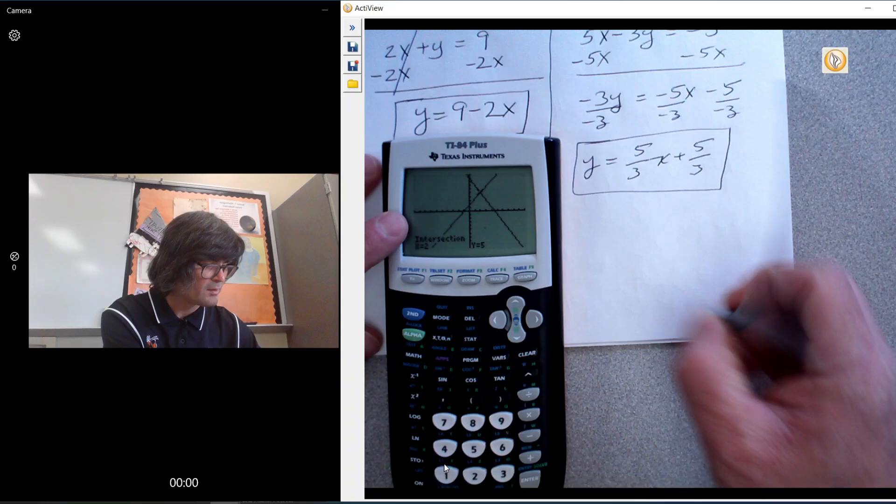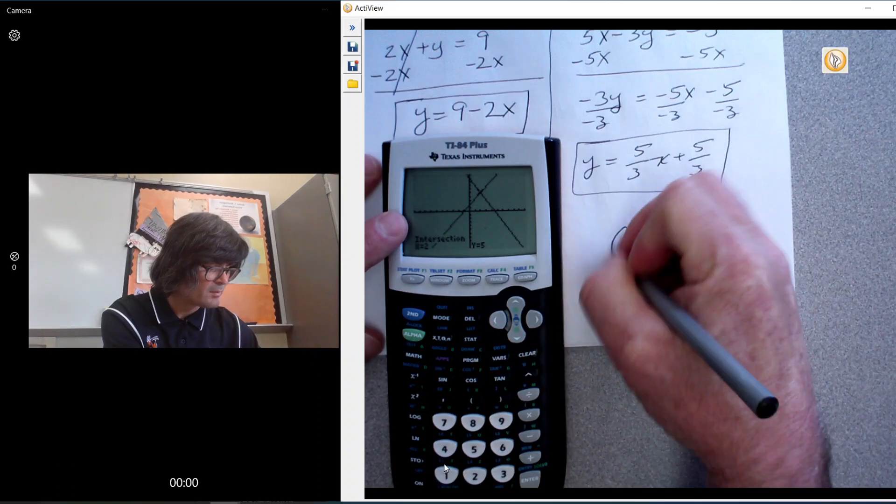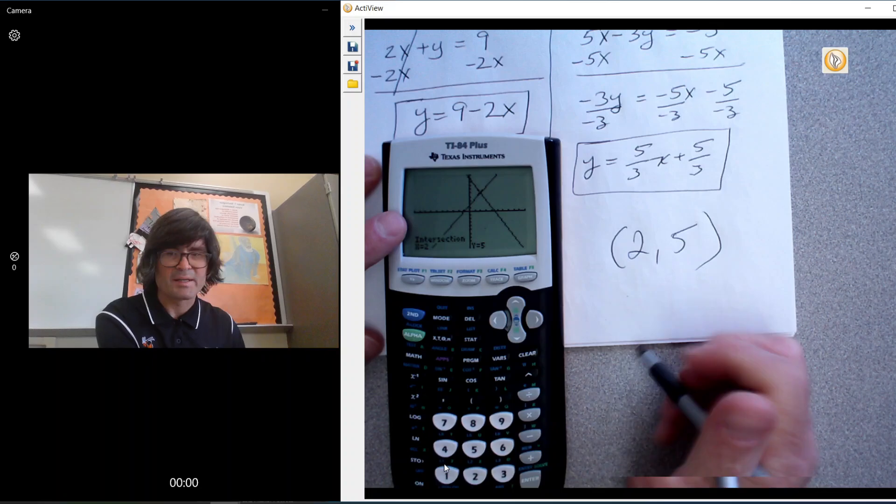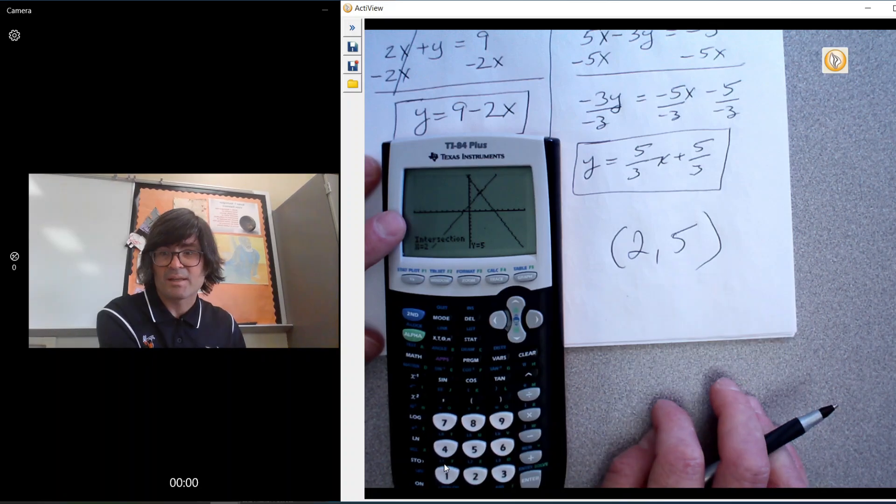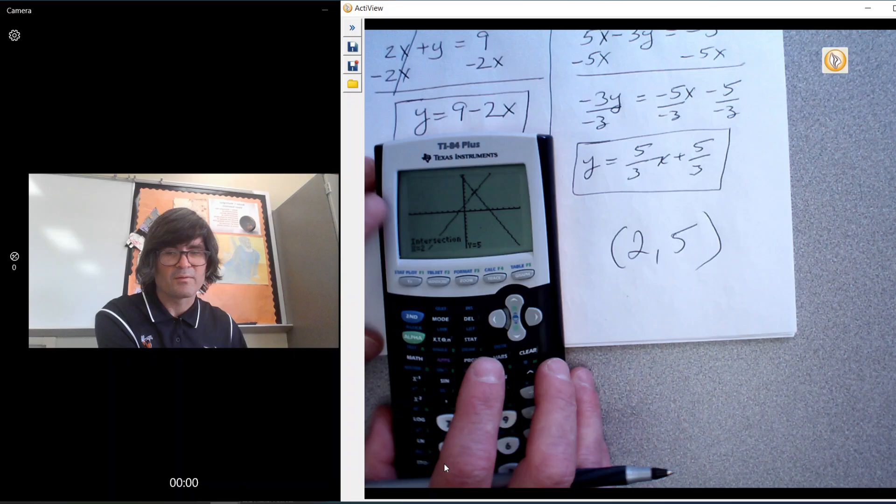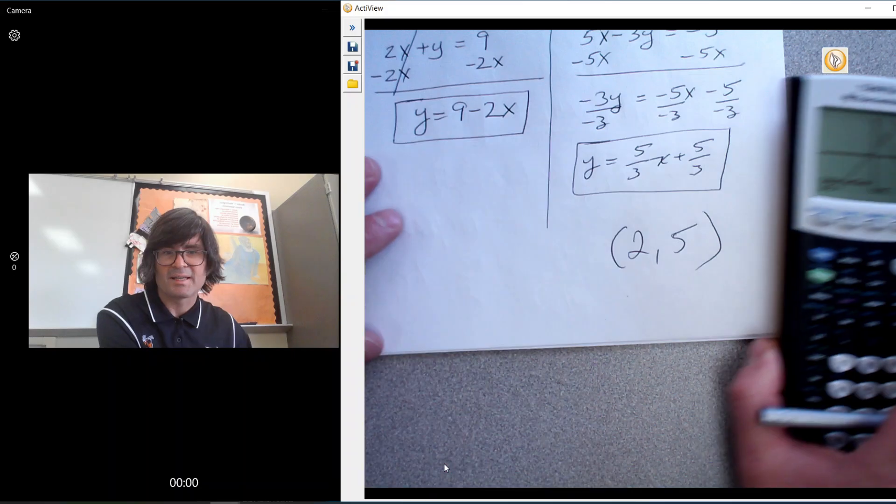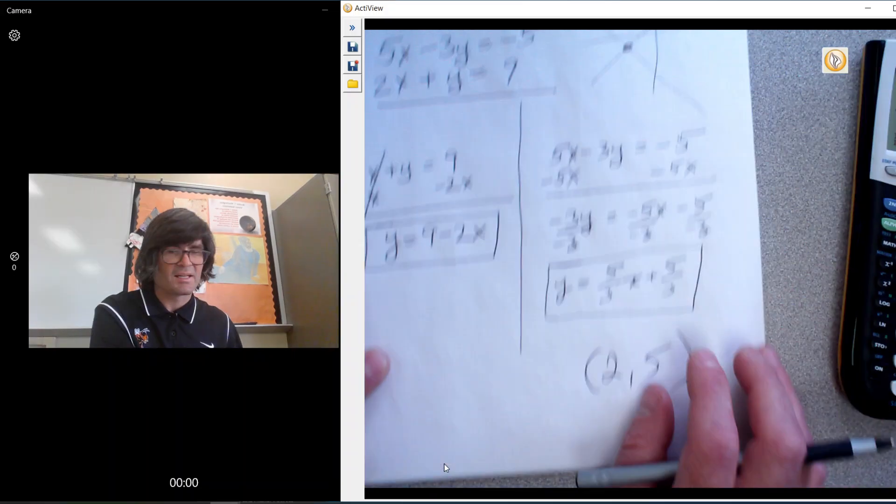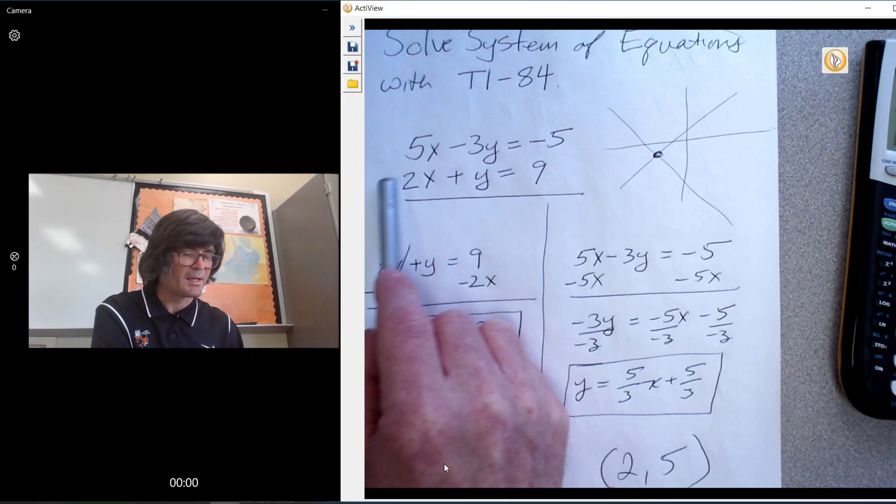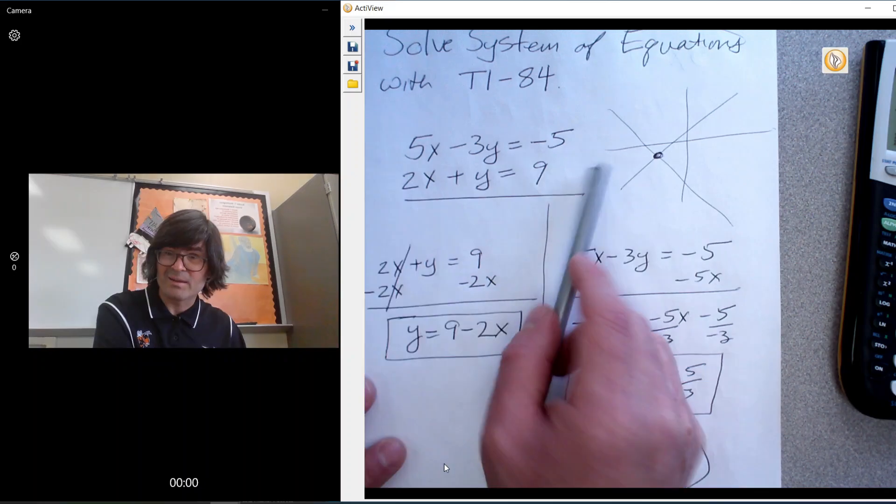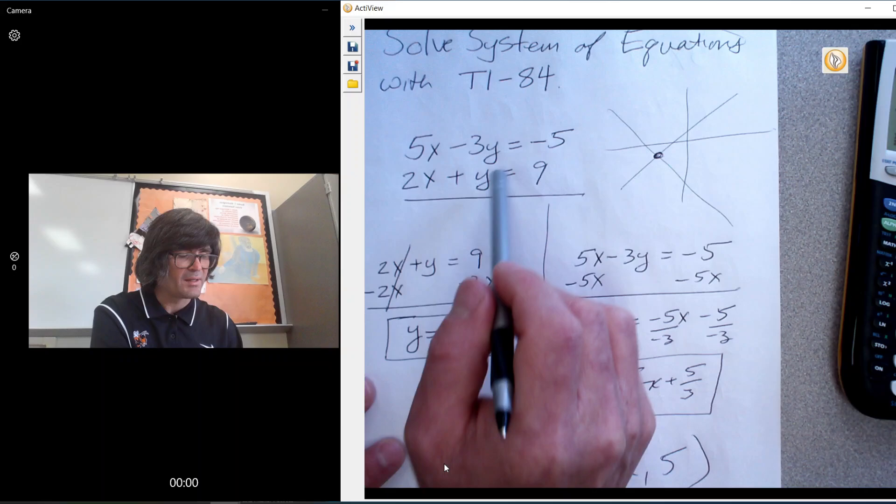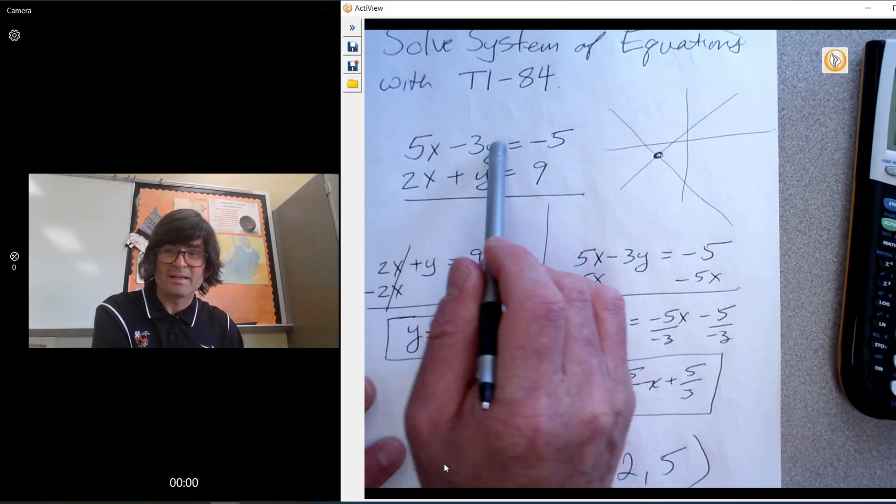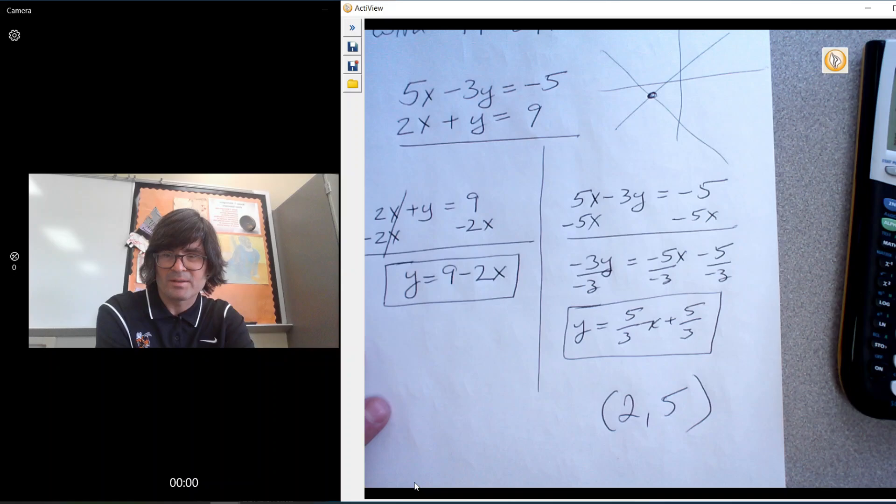X is 2 and y is 5. That's it. That's how you solve a system of equations on a TI calculator. Like I said, you could have done elimination by multiplying the bottom by 3 and adding them, or substitution by solving this for y and plugging it in up here. But this makes it really simple. I hope this helps. You guys have a good day.